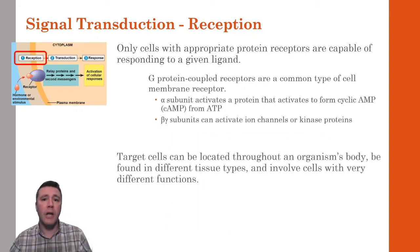Target cells for a given ligand can be distributed throughout an organism's body and have very different functions. For example, the hormone epinephrine, more commonly known as adrenaline, has target cells present in the heart, liver, lungs, and even the muscle that regulates the size of our eyes' pupils.